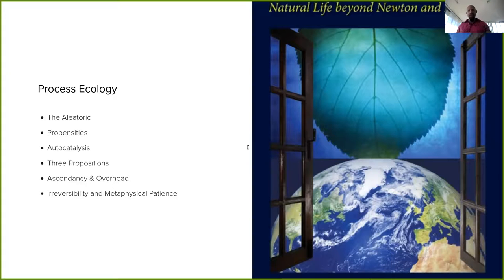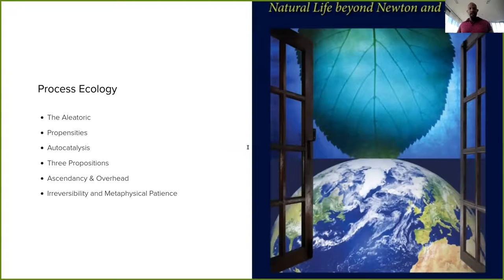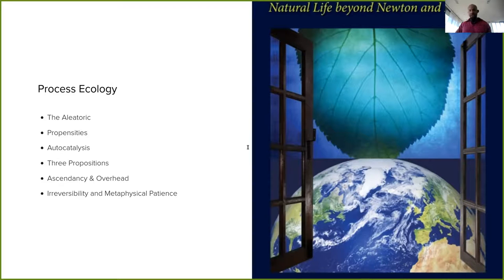Process ecology is an attempt to trace out an alternative vision for the analysis of complex systems, based on what Ulanowicz has called a shift from the Eleatic to the Milesian way of thought. The Eleatic, associated with Plato, is concerned with forms and essences beyond time and space — human beings are a shadow or bad representation of the ideal of humanity, a saucer is a bad copy of the ideal saucer, justice as we experience it is a bad copy of the ideal of justice. The Milesian school of thought is associated with the pre-Socratic philosopher Heraclitus.